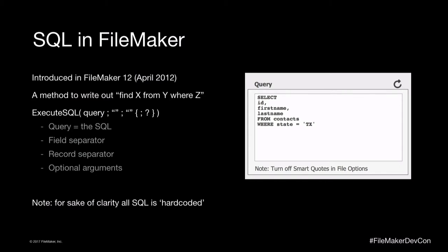The two-minute introduction to SQL in FileMaker: it came out in FileMaker 12, so it's been around a few versions. Basically, it's a method where you gather data — find X from Y where Z. The ExecuteSQL function has the query as the first parameter, then two other required parameters: the field separator, which defaults to a comma, and the record separator, which defaults to a return. So if you leave that return in, you have your return-delimited data.